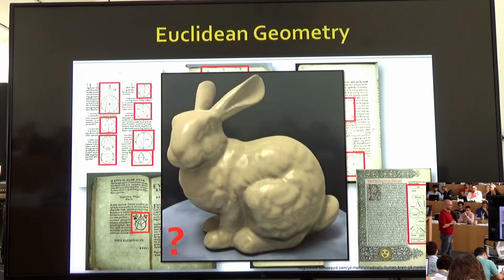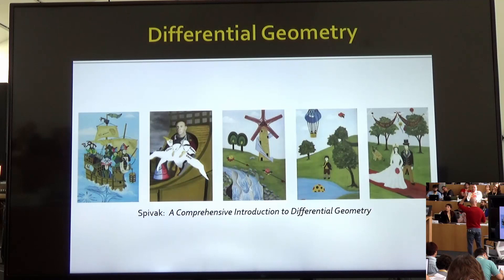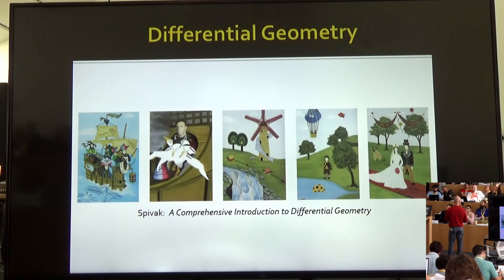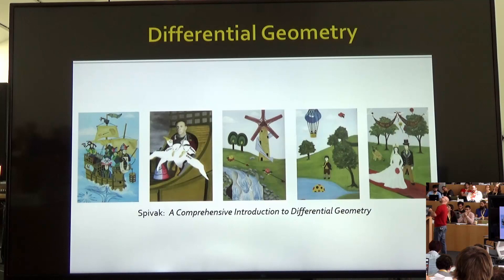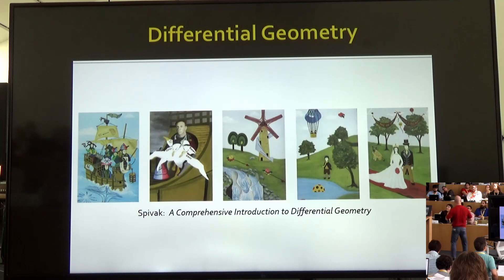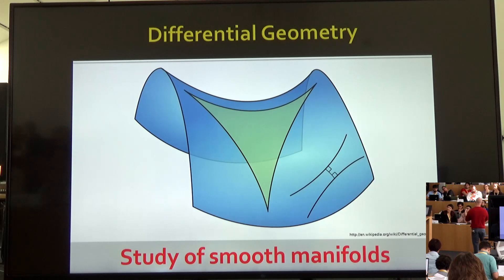There are many famous textbooks in differential geometry — Do Carmo is one, and Spivak's series of five textbooks is another. Differential geometry is all about the study of smooth manifolds. So finally, let's determine what a manifold is.